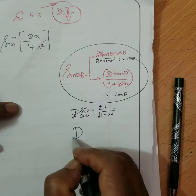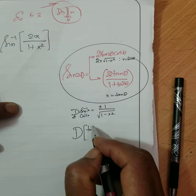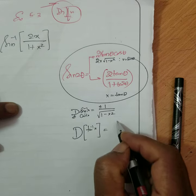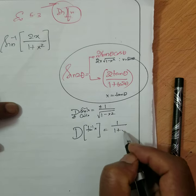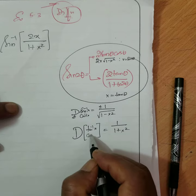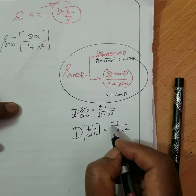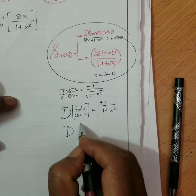Similar, differential coefficient of tan inverse x is what? 1 over 1 plus x squared. Root will go. Cot inverse x is what? Minus.